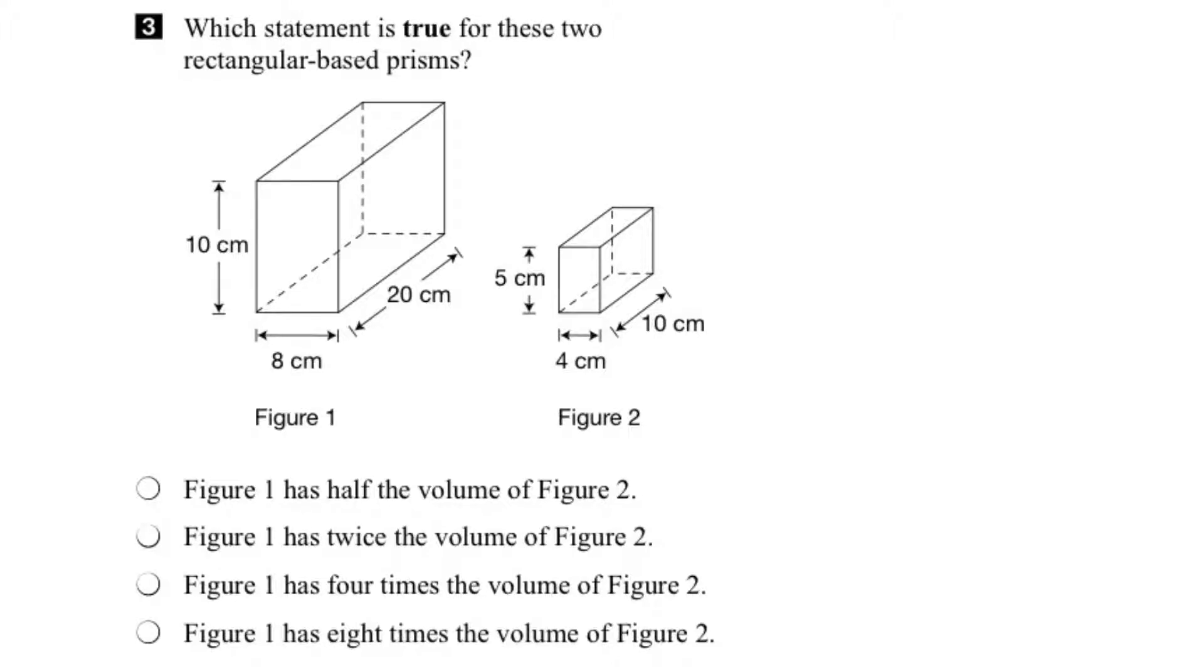Now when we're thinking about volume, we're thinking about filling in the space inside a container. So we've got a small rectangular-based prism and a large one. Why don't we find out how many of these small boxes, rectangular-based prisms, will it take to fill up the larger container?